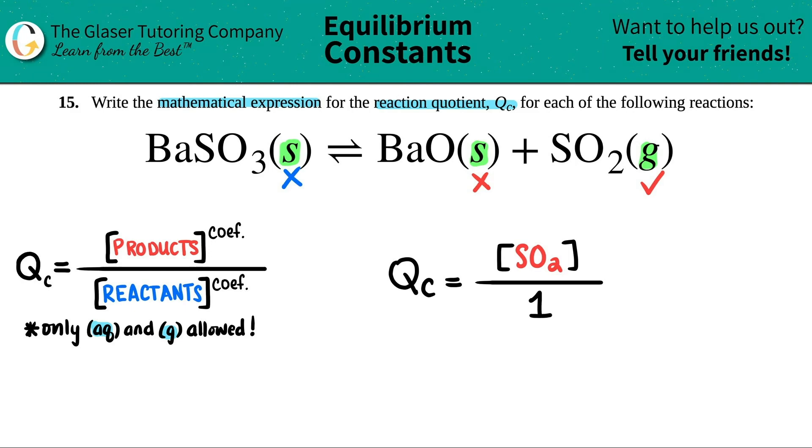But now keep in mind that anything divided by one is itself. So technically, yes, this is the correct answer. But you can simplify this by just saying that this, the QC is just equal to the concentration of SO2. And that would probably be the answer choice on either a test or a quiz. Okay? And then we're done. So there's the reaction quotient, guys.